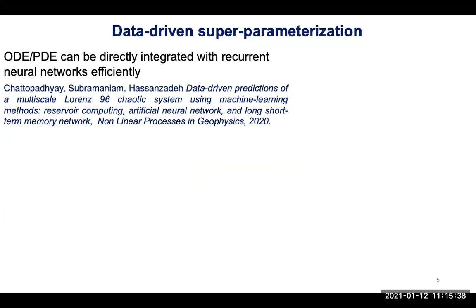When we explored the idea of super parameterization, it was based on previous work where we saw that ODEs and PDEs can be directly integrated with RNN-type architectures. This was before we realized that attention models can do far better, but there are certain advantages to doing RNNs for dynamical systems from theoretical considerations. The idea for super parameterization is pretty simple.